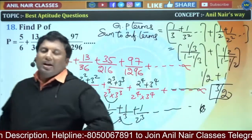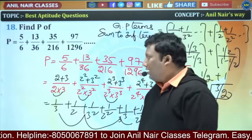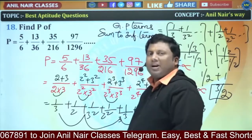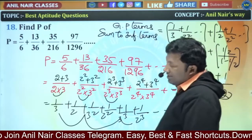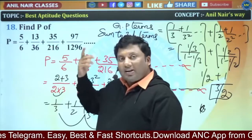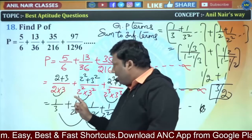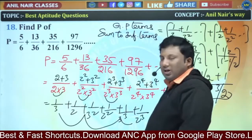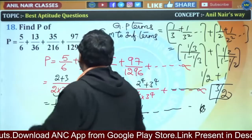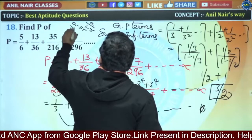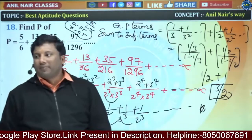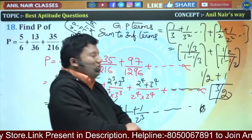I hope the idea is clear. If this is given in an examination, you should not use this method — I will tell you another method. This alternate method is a little more complex and time-consuming, but it directly uses the GP sum to infinite series formula a/(1−r), where a is the first term and r is the common ratio t2/t1.